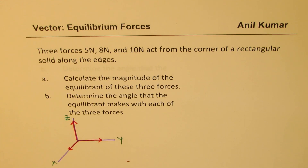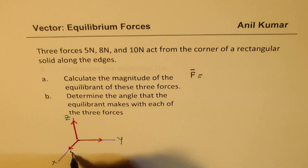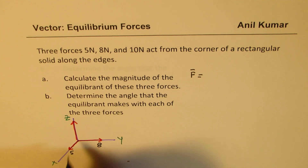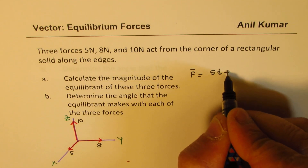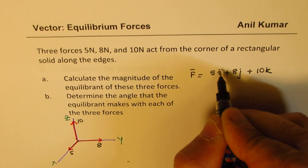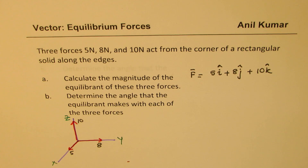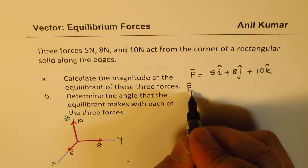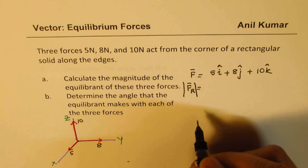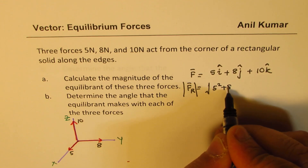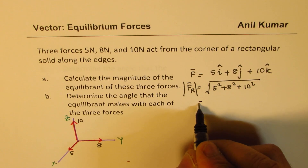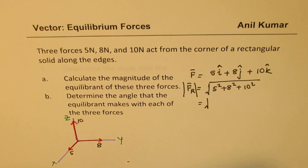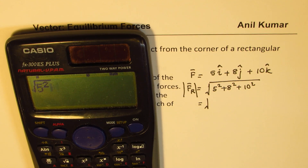The net force is a combination of all three. This is 5, this is 8, and that is 10 Newtons. So we write this as 5i + 8j + 10k, where i, j, k are unit vectors along x, y, and z. To find the magnitude of the equilibrant, we first find the magnitude of the resultant: √(5² + 8² + 10²).